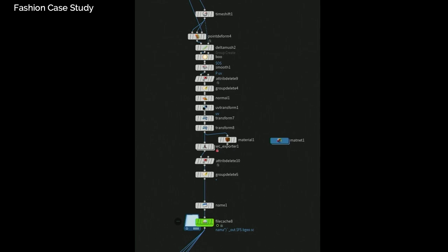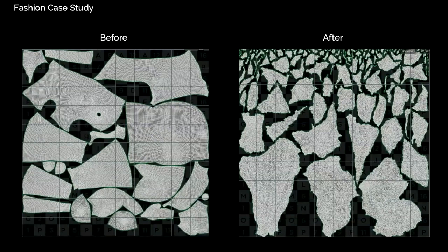On the right is the original UV, and on the left is our automatic UV that takes the skeletal solve and breaks out the body. Based on the skeletal bones, we can automatically give priority to where the UVs will be built.